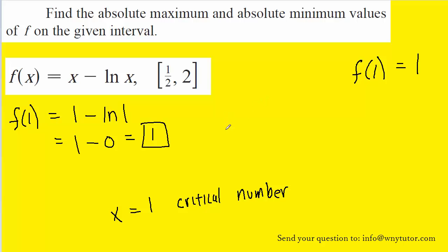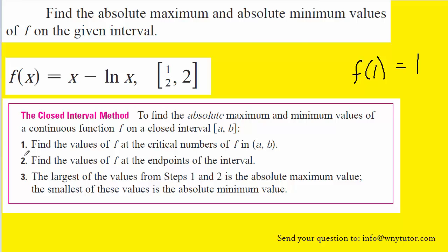We'll next look at the second step of the closed interval method. Step 2 is pretty straightforward. We have to find the values of the function at the endpoints of the interval. Those endpoints were given to us as 1 half and 2. So basically, we have to simply calculate f of 1 half and also f of 2. So let's go ahead and do so.